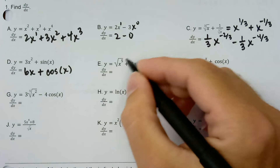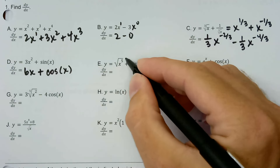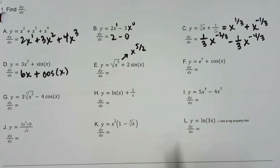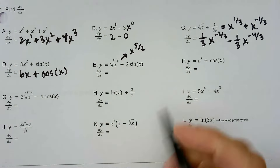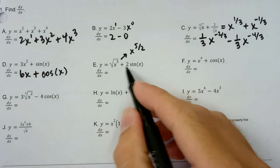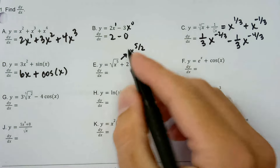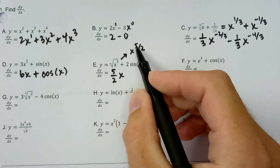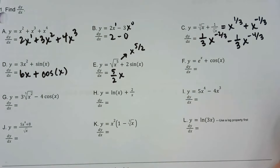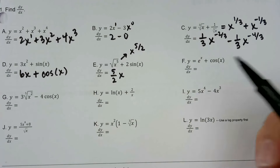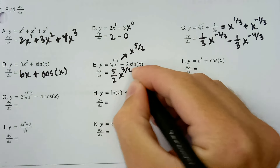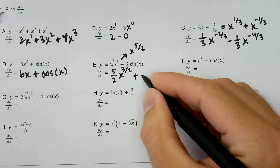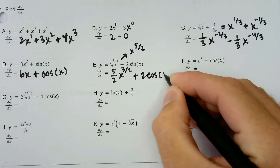The square root of x to the five — I'm just going to call that x to the 5/2. Plus two sine x. x to the 5/2: I can take the derivative of that — 5/2 times x to the 5/2 subtract one. Well, 5/2 is like 2.5; if I subtract one I'd have 1.5, and that's 3/2. Then the derivative of two sine x is going to be two cosine x.